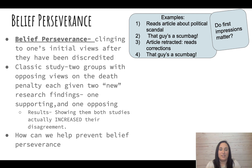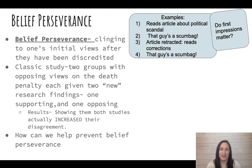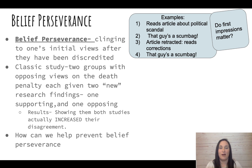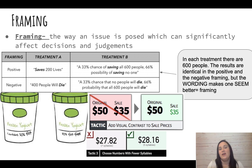Being presented with opposing information just pushes people further in the direction they're already leaning. One way to prevent belief perseverance - which is really important in today's world - is to be open to thinking about the other side. If you believe the death penalty should be ended, play with the idea: what are the benefits of the death penalty? Think about the opposite side so you can better understand a middle ground.